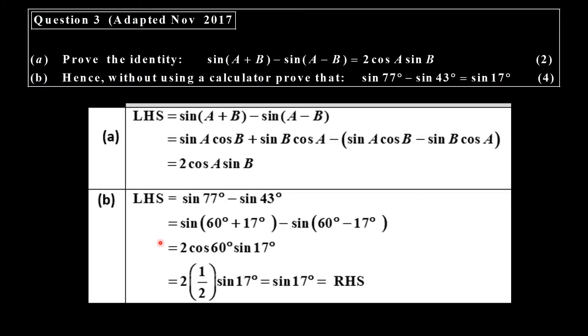In this particular example here from November 2017, we have two identities to prove. So I take the sine a plus b, and you can see I've expanded there, the sine a minus b, and I've expanded there. You can see that that one and that one cancels out, and then I have a negative times, and so I actually have two of these cos a sine b's there.